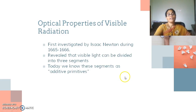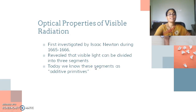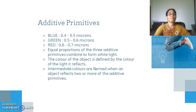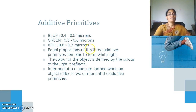Optical properties of visible radiation were first investigated by Newton during 1665 and 66. They revealed that visible light can be divided into three basic segments. Today we know these segments as additive primitives. The major components of additive primitives are blue, green, and red, which range between 0.4 to 0.5 microns, green ranges between 0.5 to 0.6 microns, and red between 0.6 to 0.7 microns. Equal proportions of the three additive primitives combine to form white light.